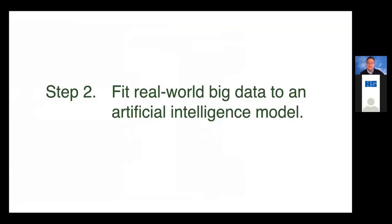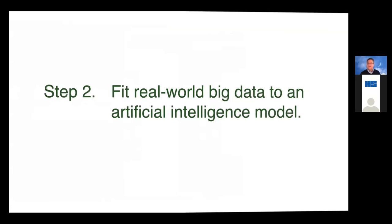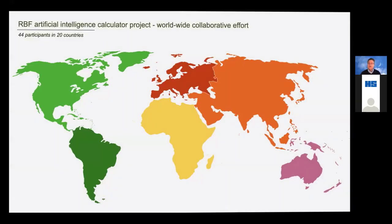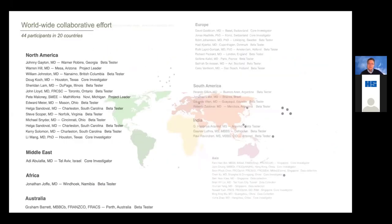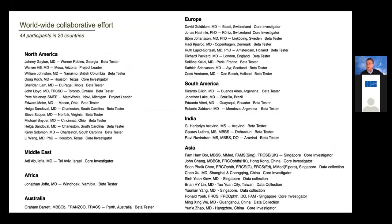Next, we need to fit real-world big data to the artificial intelligence model. We know what factors we need, so now we need lots of data. We ask our ophthalmic colleagues around the world to help us. We have 44 participants in 24 countries across North America, South America, Europe, Africa, the Middle East, India, Asia, and Australia — volunteers who very generously donated their time and their cases. Many of these physicians represent some of the most accomplished cataract surgeons in the world for their respective countries, and we're very grateful for their help and continued support.